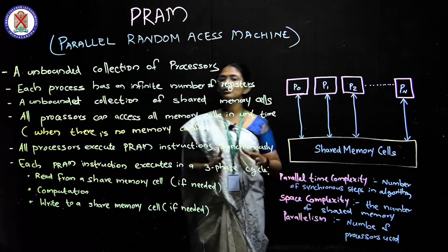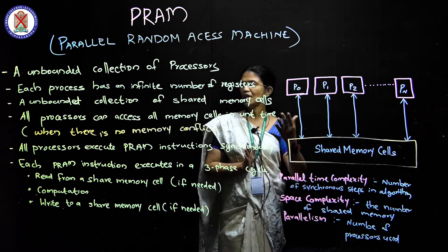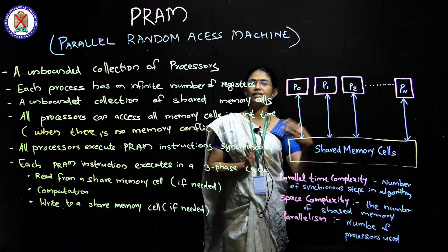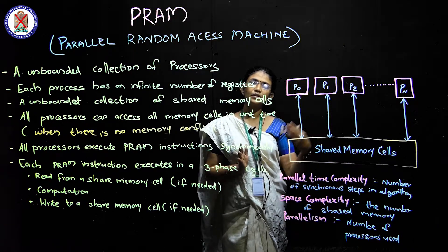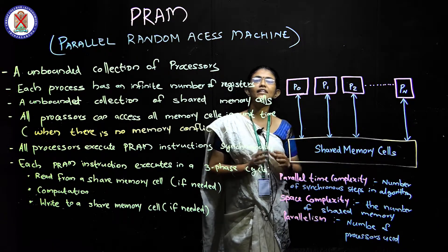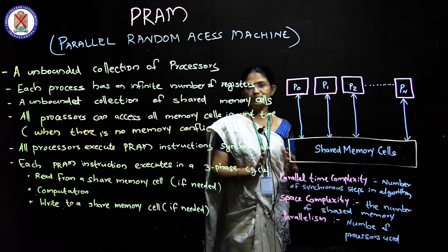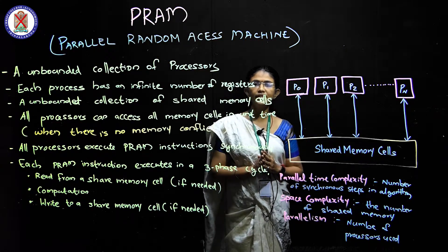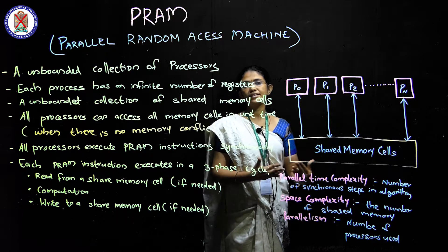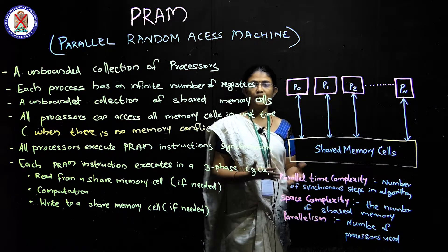When one machine can read and write to the same memory cell, there is a conflict. We can communicate through memory cells, but this creates a conflict situation, which is called parallel and concurrent read and write.